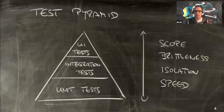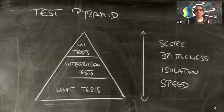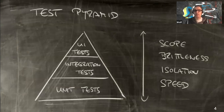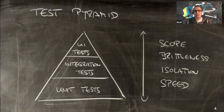Speed matters for fast feedback. As a developer preparing to push a change, I want to run all tests locally first. Unit tests should give immediate feedback on whether I've broken something. Hence we want many unit tests and only a few integration tests. But there's more to it than just speed and the feedback cycle.